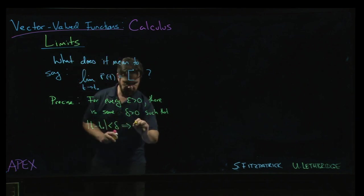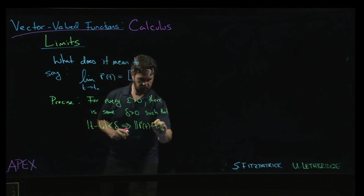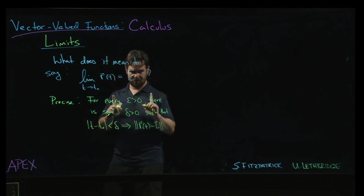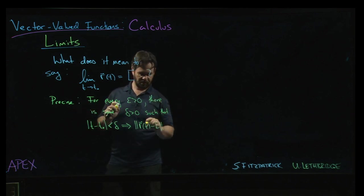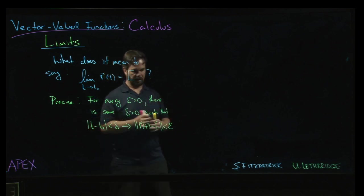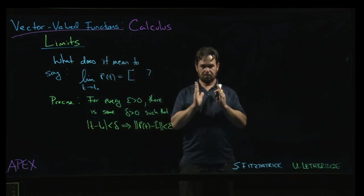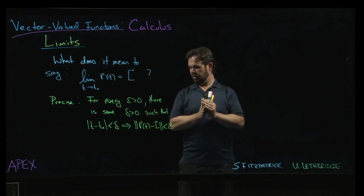...that implies that the magnitude of r(t) minus L. And here's another great thing about working with vectors: we can talk about the difference of two vectors. It makes sense. We can talk about the magnitude. We need to take the magnitude because we want to compare to this real number epsilon, so we need to think about the length. The length of the difference is a measure of how close together the two vectors are.